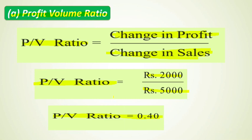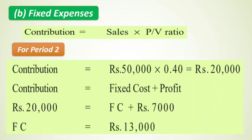Part A is clear. Now let's move to Part B — Fixed Expenses. Another formula for PV ratio is Contribution divided by Sales. When you divide contribution by sales you get the profit volume ratio. We will now find contribution first, because once we have contribution and profit, we can easily find fixed cost.